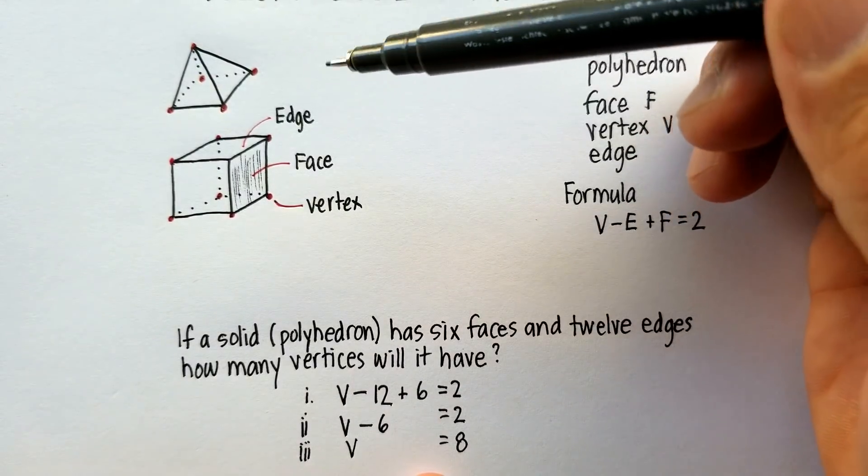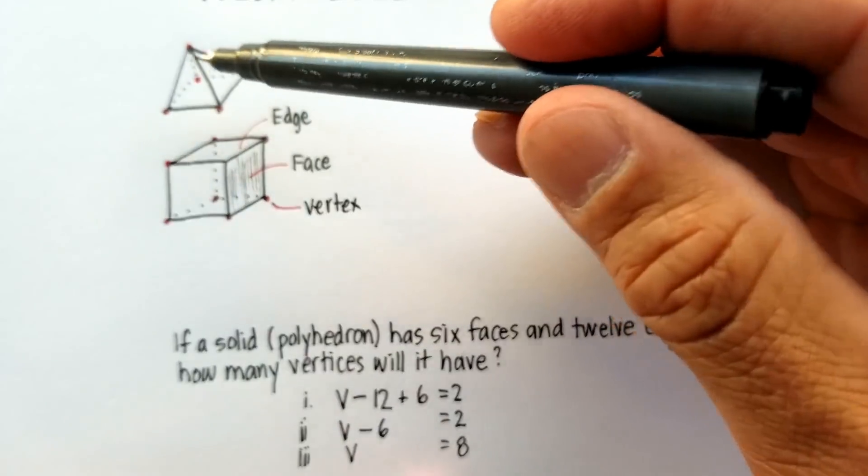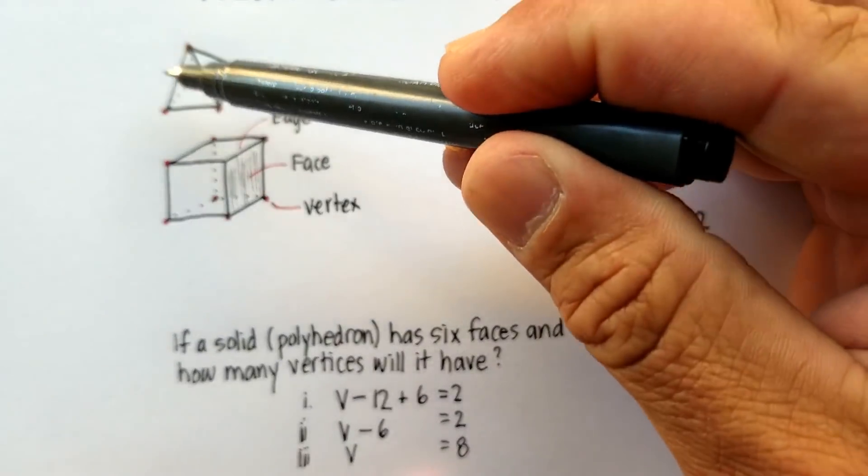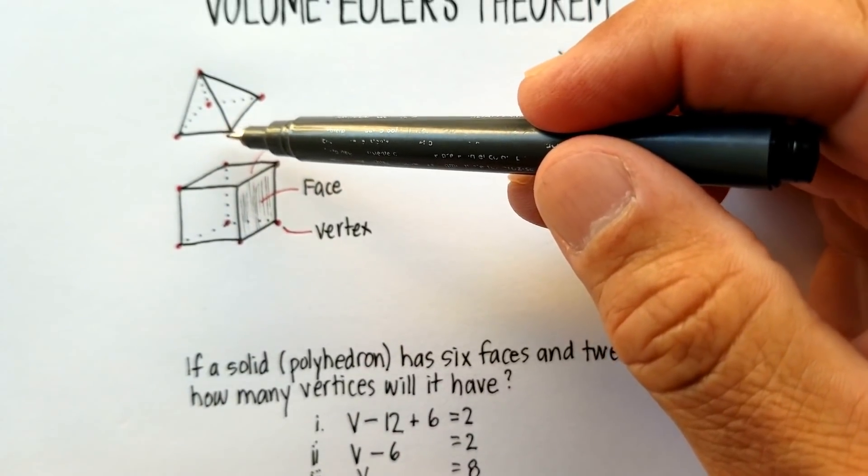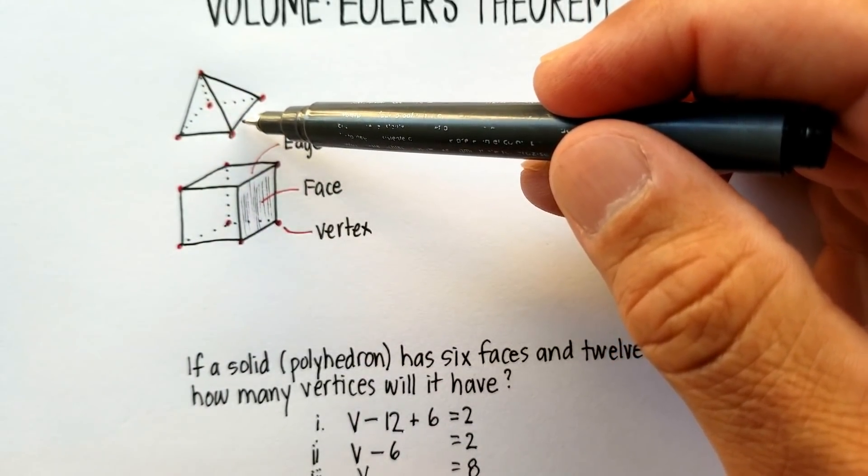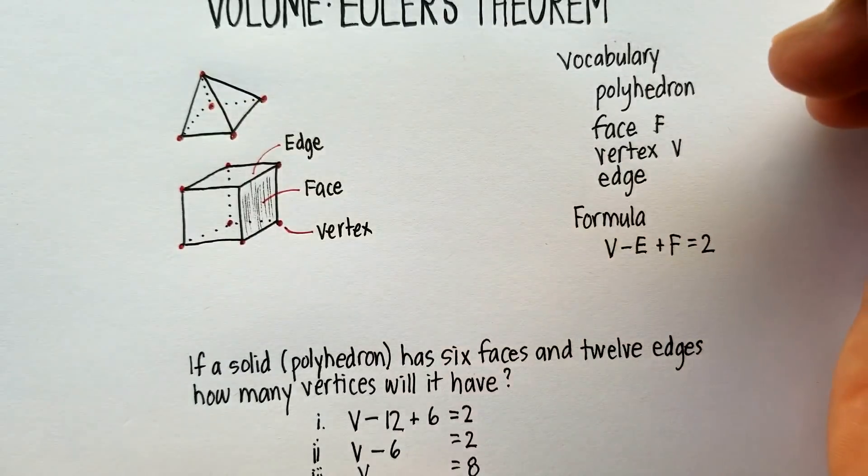Now, what I would like you to do is to prove that this formula, Euler's theorem, actually follows and is true for this particular pyramid shape that we have up here. And I'll let you do that on your own. I hope this video was helpful. Thank you.